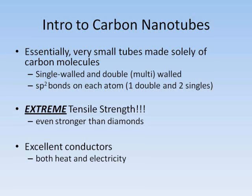Carbon nanotubes, because of their intense tensile strength and other properties, can be used for a very large number of applications. The only drawback is the actual production of carbon nanotubes. Despite advancements in this field over the past decade, carbon nanotubes are still produced at a measured rate. Chemical engineers and nanophysicists have come up with a number of ways to produce this material; I'm only going to cover three methods of synthesizing carbon nanotubes, because they're the most efficient methods worth mentioning.